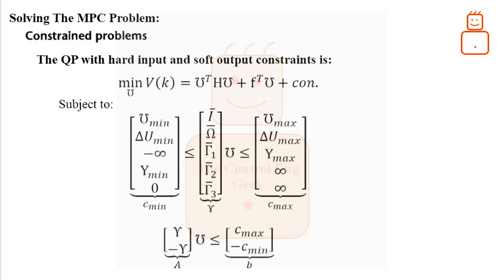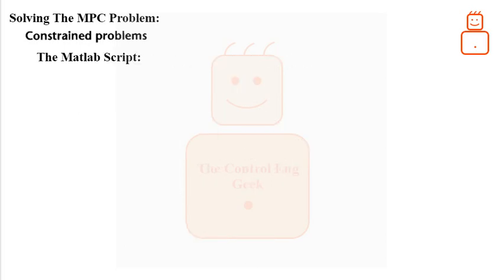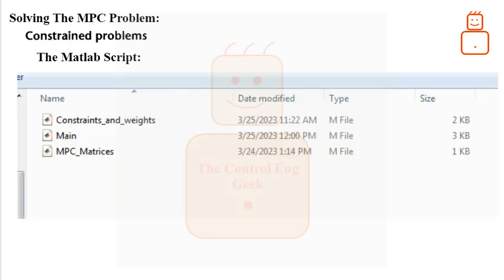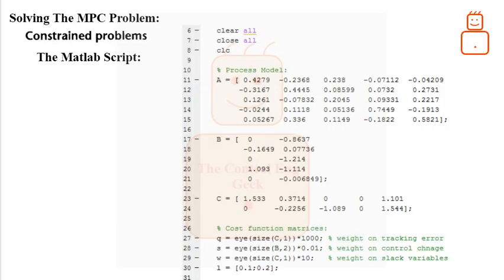Now let me illustrate the MATLAB script for our MPC problem. Basically, we have three files as shown. The main file is the one that runs the MPC problem. While the other two files support the main file by some computations. Starting with the main file. The file first gives the process state space matrices.